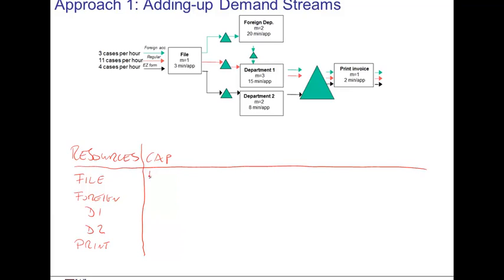For the first step, that is one over three. This is expressed in applications per minute, which we can transform to 20 units per hour. In the same way, we find that the capacity at the foreign department is 6 units per hour, 12 at department one, 15 at department two, and 30 per printing. This is expressed in applications per hour.